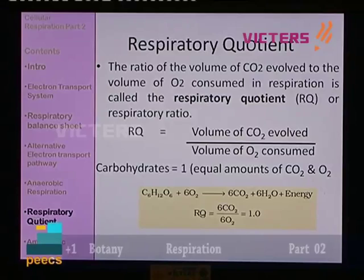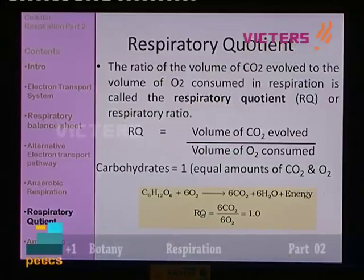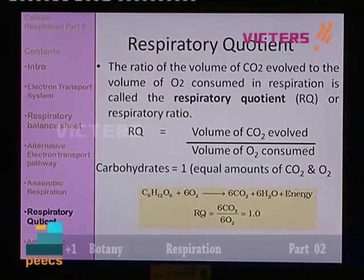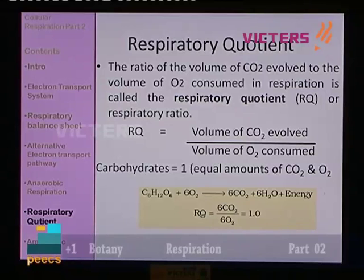Take the example of carbohydrates — for carbohydrates, RQ is 1. Consider glucose: C6H12O6 joins with 6 molecules of oxygen to produce 6 molecules of carbon dioxide and 6 molecules of water, with release of energy. So we have 6 CO2 and consume 6 O2: 6 CO2 ÷ 6 O2 = 1. For carbohydrates, the RQ value is 1.